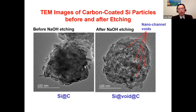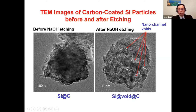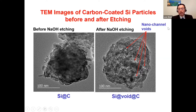TEM imaging reveals what happens inside the particles. Before sodium hydroxide etching, the solid particle is not very transparent to the electron beam. After etching, some regions show very bright channels, indicating those areas are transparent to electrons in this transmission electron microscope. Bright spots or bright channels indicate internal voids, which are nano-channel shaped — we call this the silicon-voids-carbon micro-reactor structure.